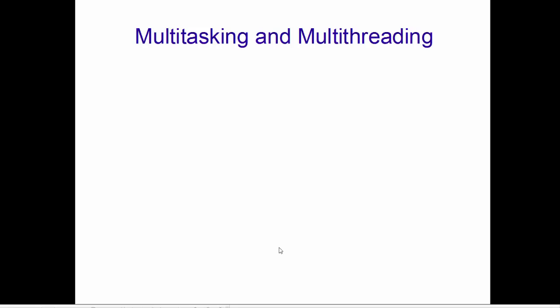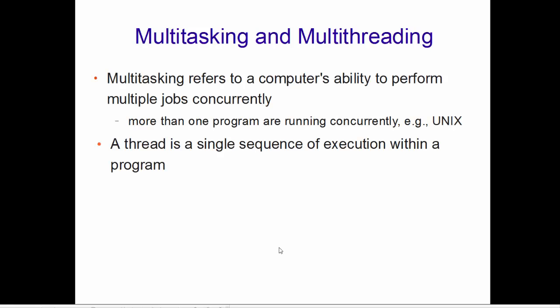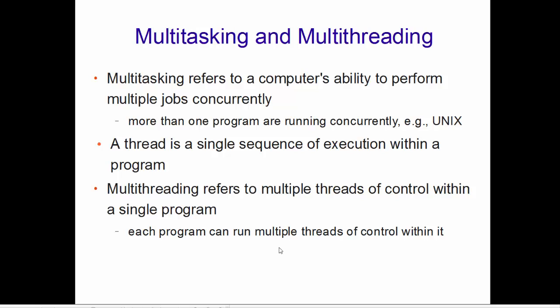First of all, we need to know the difference between multitasking and multi-threading. Multitasking refers to the computer's ability to perform multiple jobs concurrently. One example is your operating system itself — your computer can run different processes like Google Chrome, a PDF viewer, a presentation, or a media player. The ability of your computer to handle these different processes or tasks is called multitasking.